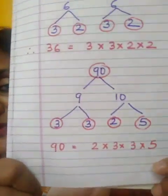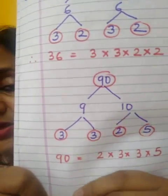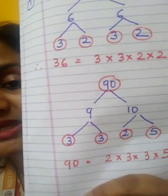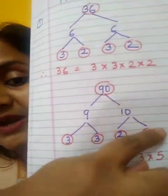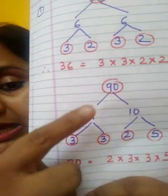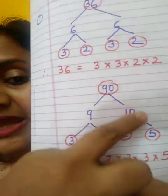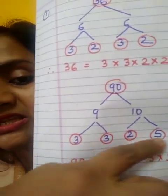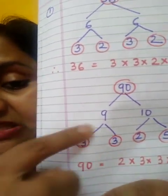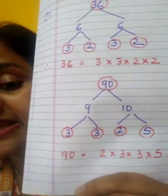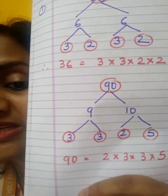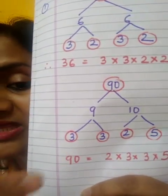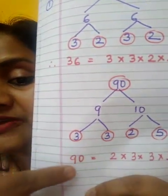There is one more example. I have taken 90 here. We know that 10 × 9 = 90. I have made these branches of 10 and 9. Then we take separate factors of 10 and 9: 9 is 3 × 3, and 10 is 5 × 2. We stop here because the numbers at the end, which I have encircled with red color, are prime numbers — not further divisible by any other number. And if you check the product of these prime numbers, you will get 90 again.